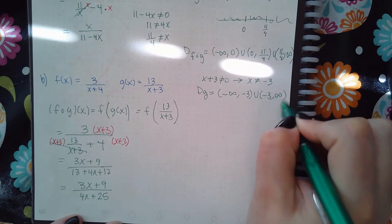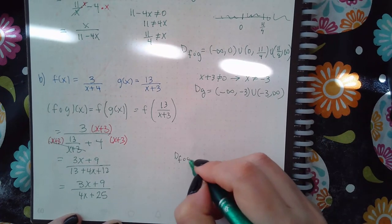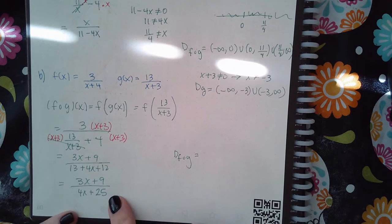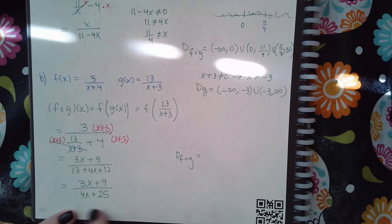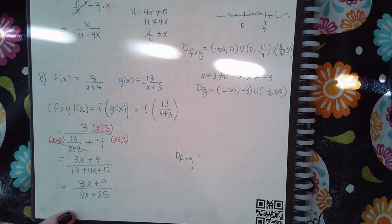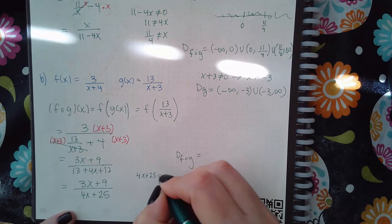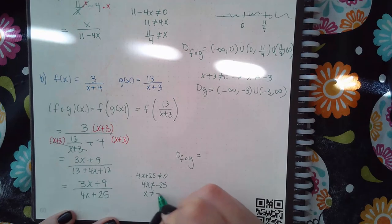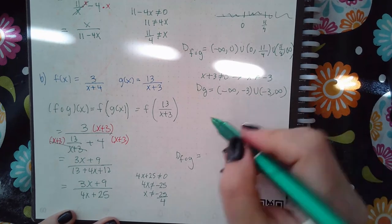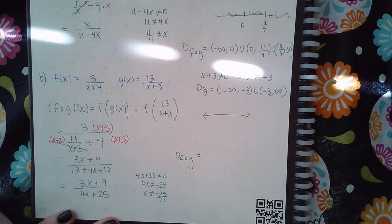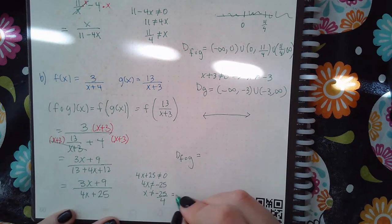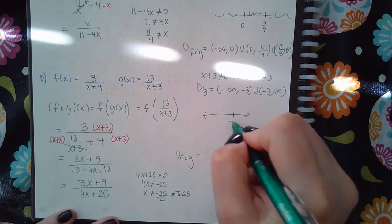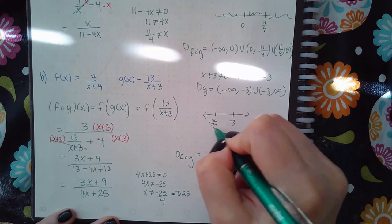So the potential domain is negative infinity to negative 3, and then negative 3 to infinity. To find the domain of f of g, I also consider the simplified expression. That denominator cannot equal 0, meaning 4x cannot equal negative 25, so x cannot equal negative 25 over 4, which is about negative 6.25.